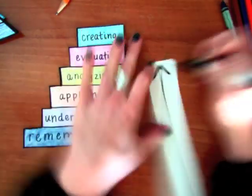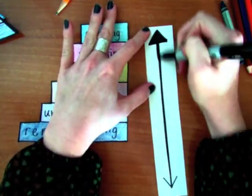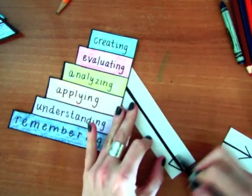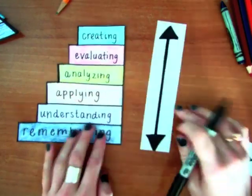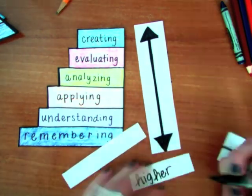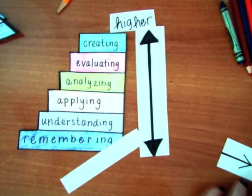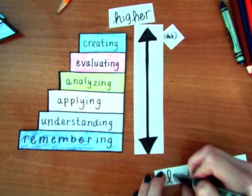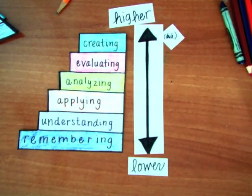Bloom's Taxonomy is split into six different domains. As you go up the pyramid or my staircase, the processes of thinking can get more specific and more challenging for students. Bloom's can be used as a spectrum of sorts that varies between lower order thinking and higher order thinking, with remembering being on the lower order and creating on the higher.